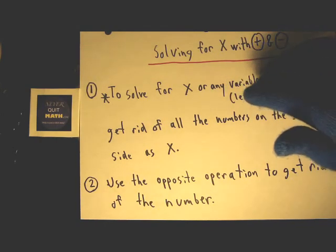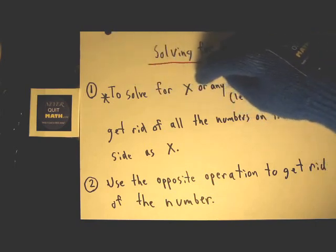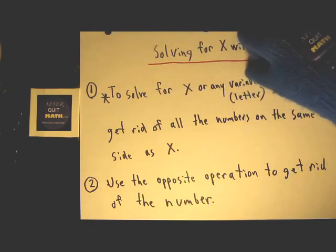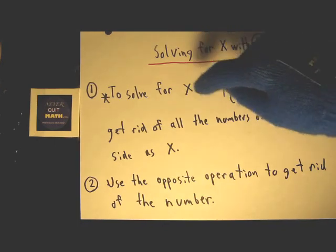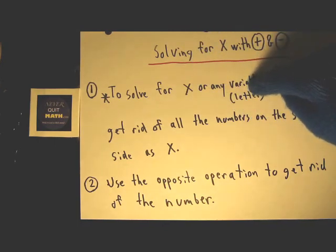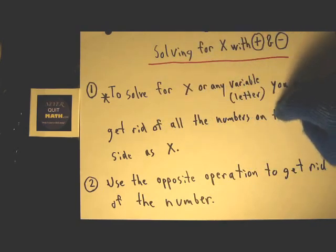To solve for x or any variable, remember a variable is just a letter when you're dealing with math, so it might be x, might be y, might be b, whatever. So to solve for x or any variable, you must get rid of all the numbers on the same side as x.